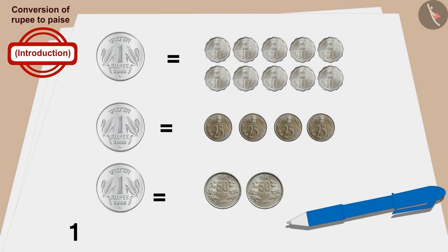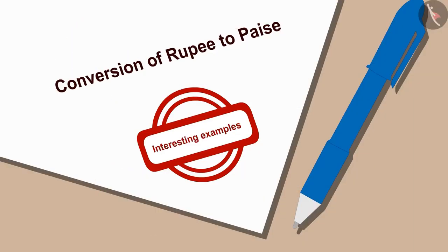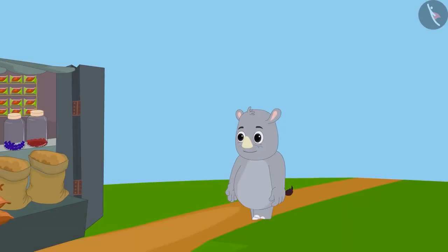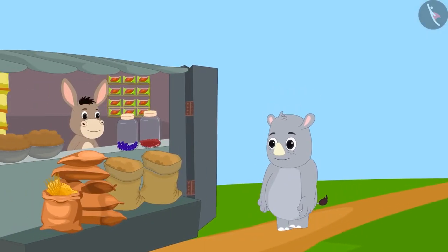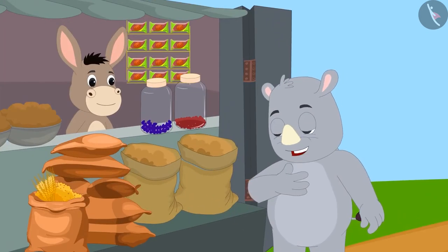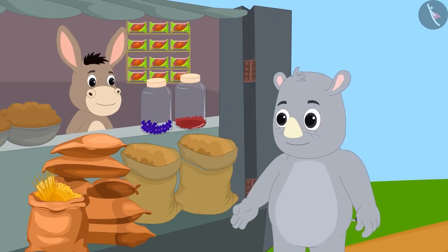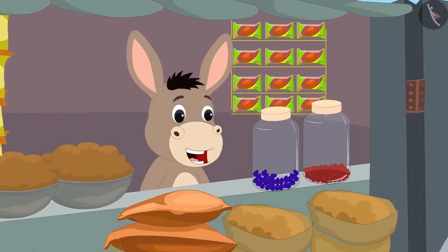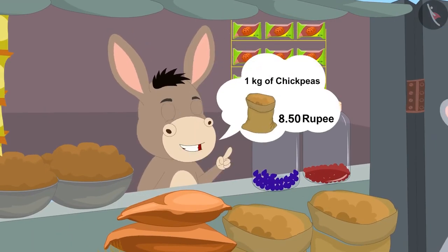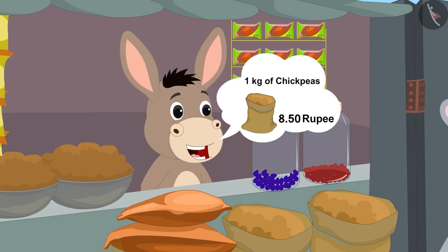In the previous video, we learnt to convert rupee to paise. In this video, we will learn more about it with some interesting examples. Gaggu has come to buy groceries today. He asked Bola the price of 1 kg of chickpeas. Bola told him that 1 kg of chickpeas is worth 8 rupees 50 paise.